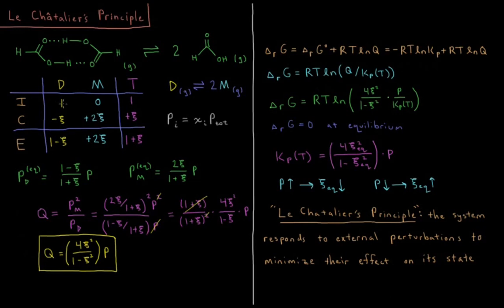As the extent of reaction proceeds, we consume the dimer. Its coefficient is one, so the change is minus C. We produce the monomer with a coefficient of two, so the change is plus two C. The total change in the number of moles in the gas phase is minus C plus two C, which equals plus C. So the equilibrium values are: one minus C for the dimer, two C for the monomer, and one plus C for the total.